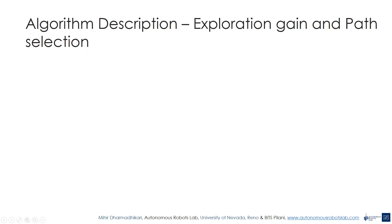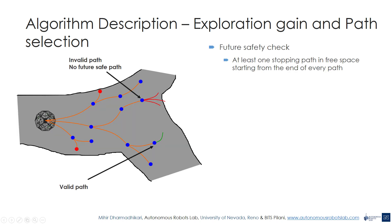In the next step of the algorithm, we calculate the exploration gain to select the best path from the motion primitive tree. All paths in the motion primitive tree are first checked for future safety. Starting from the endpoint of every path, a stopping path is calculated by applying acceleration inputs from a fixed set of acceleration inputs. If one acceleration is found which brings the robot to a stop through a path lying completely in free space, that path is kept, else it is removed. In the figure shown, the path on top does not have any possible stopping paths. The path on the bottom has one stopping path.